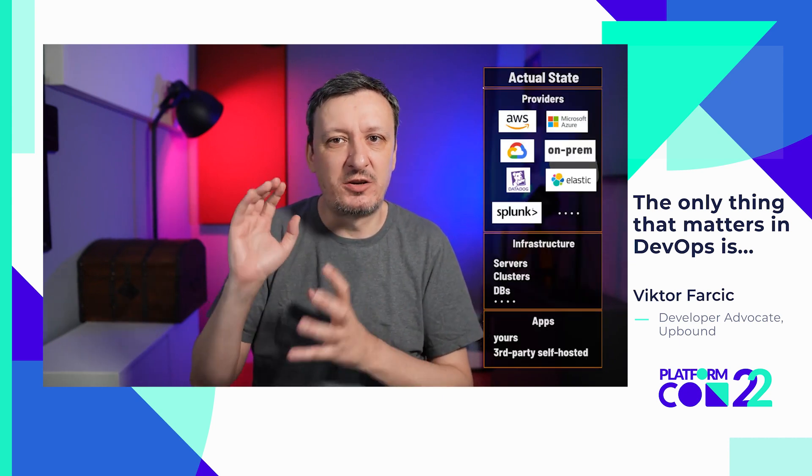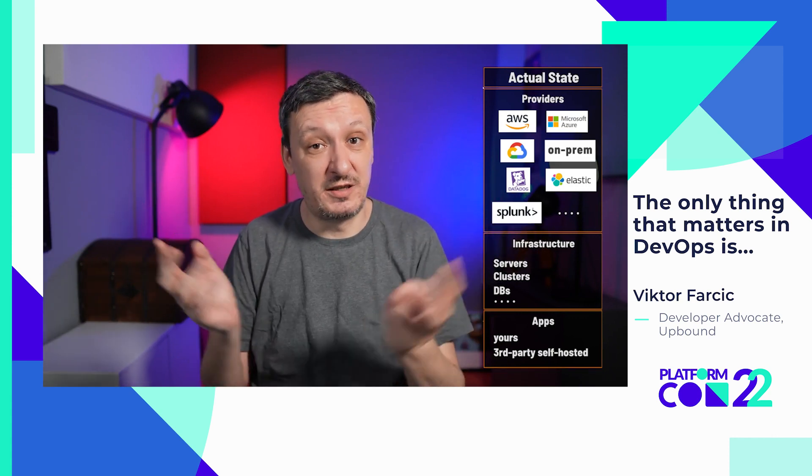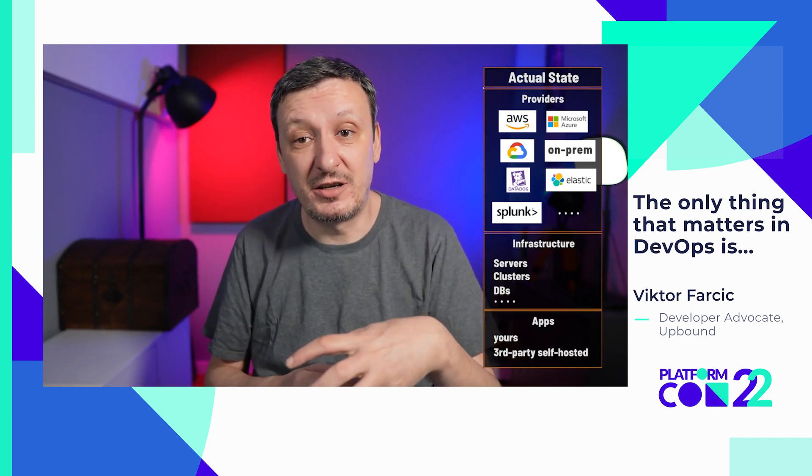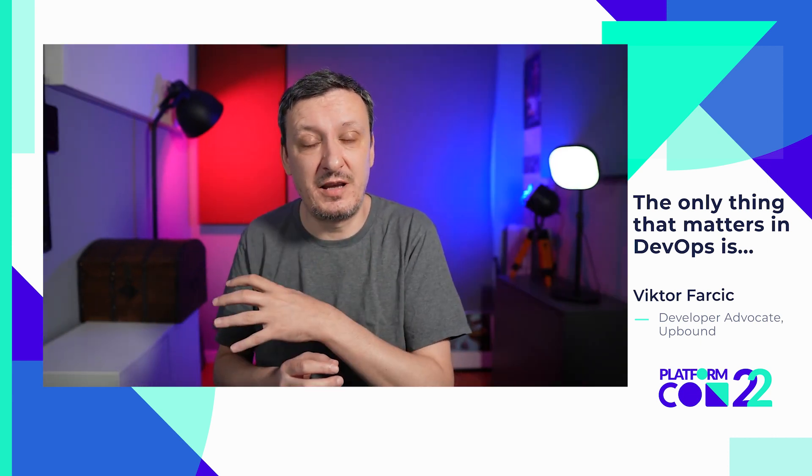So if we were building an Internal Developer Platform today from scratch, how would we do it? We would need to combine at least five different areas. We need to be able to manage the actual state, which can be different providers like AWS, Azure, Google, maybe on-prem, maybe Datadog, Splunk, Elastic, and so on — there are many providers. Everybody today is multi-cloud: if you use AWS and GitHub, those are two cloud services, making you multi-cloud. Within those providers we manage servers, clusters, databases, and applications.